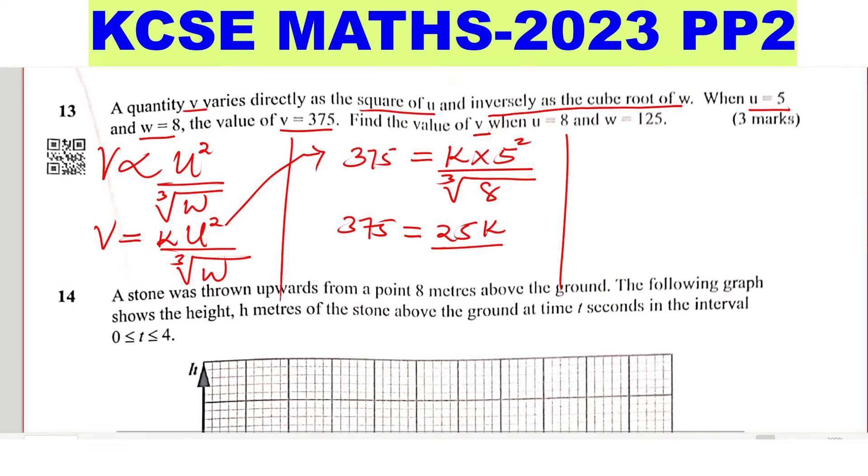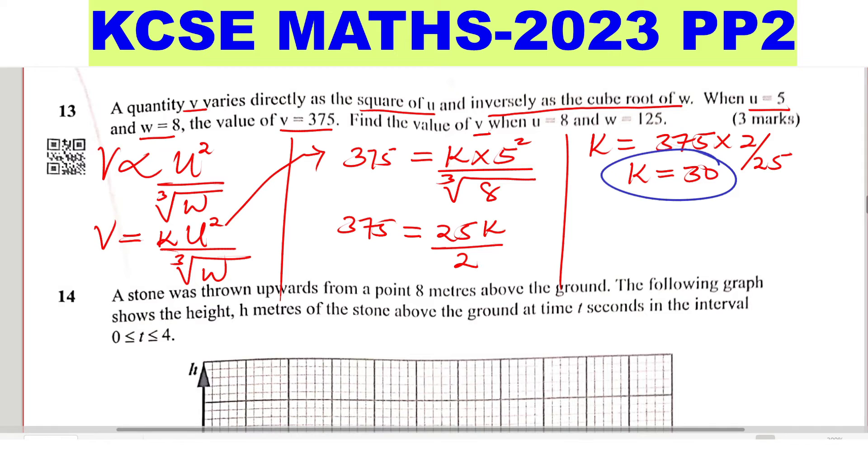So let us get K, make K the subject. K will be given by 375 multiply by 2 divided by 25, and K will give you 30. So that is the value of the constant.